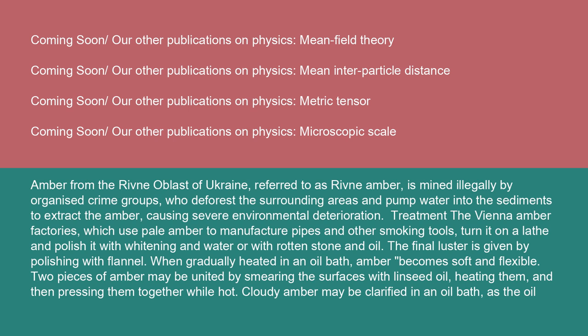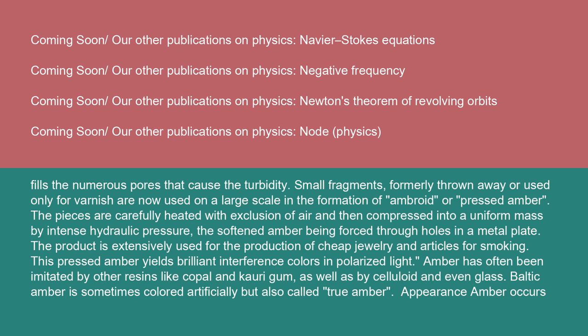Treatment: Vienna amber factories, which use pale amber to manufacture pipes and other smoking tools, turn it on a lathe, and polish it with whitening and water or with rottenstone and oil. The final luster is given by polishing with flannel. When gradually heated in an oil bath, amber becomes soft and flexible. Two pieces of amber may be united by smearing the surfaces with linseed oil, heating them, and then pressing them together while hot. Cloudy amber may be clarified in an oil bath, as the oil fills the numerous pores that cause the turbidity. Small fragments, formerly thrown away or used only for varnish, are now used on a large scale in the formation of ambroid or pressed amber. The pieces are carefully heated with exclusion of air and then compressed into a uniform mass by intense hydraulic pressure, the softened amber being forced through holes in a metal plate. The product is extensively used for the production of cheap jewelry and articles for smoking. This pressed amber yields brilliant interference colors in polarized light.